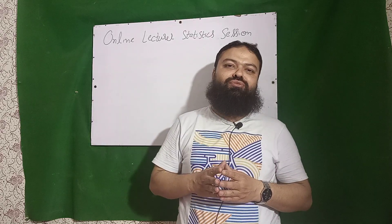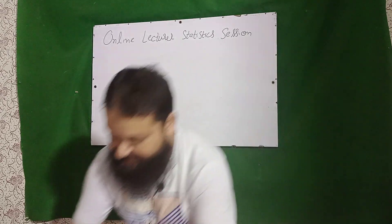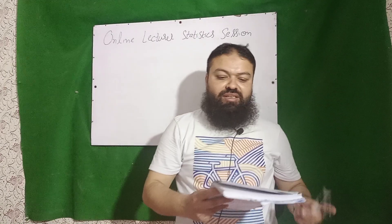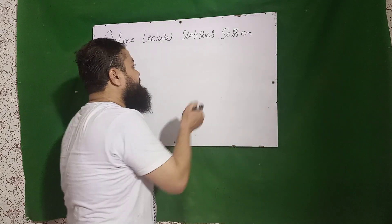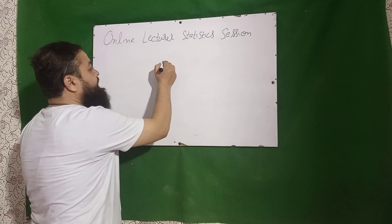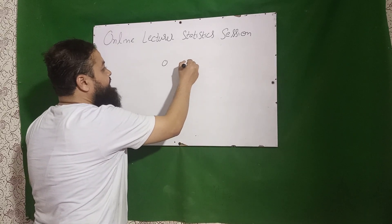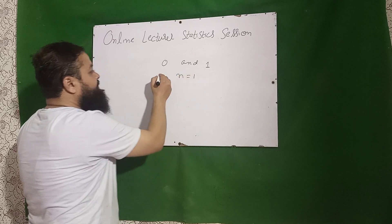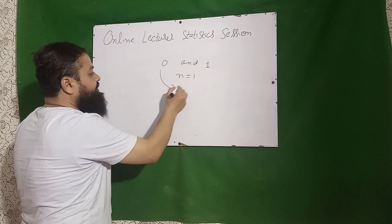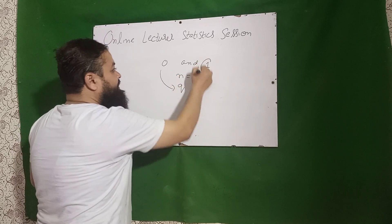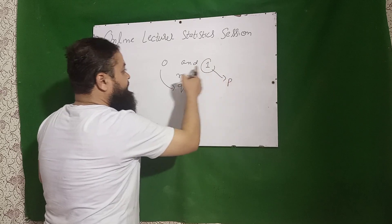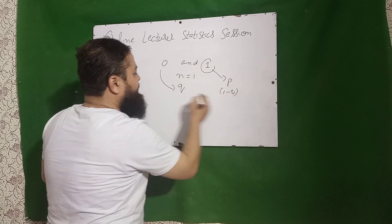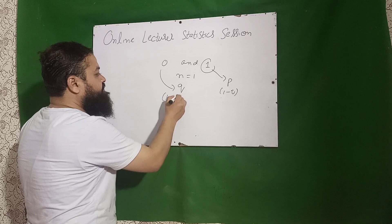Question number one: in the Bernoulli distribution, the random variable can take the values zero and one — there is only one trial. Zero is for failure and one is for success. It can also be written as 1 minus Q, or alternatively as 1 minus P.